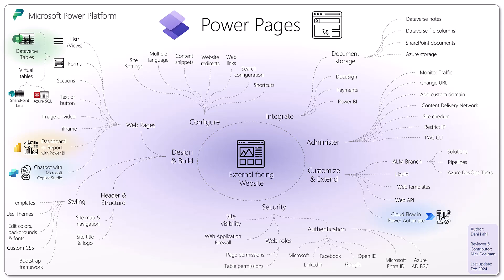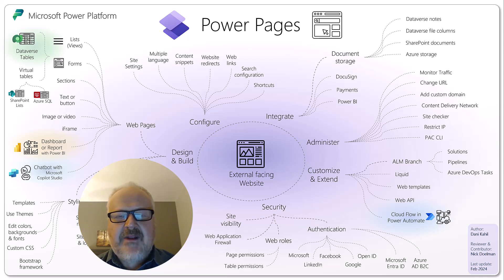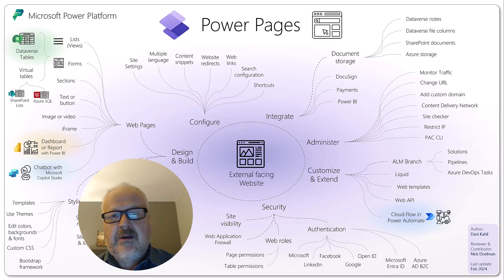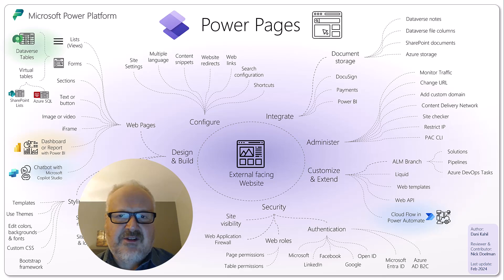For security, you can switch the visibility of a website on or off, assign page permissions to web roles, and assign table permissions to specific web roles. Web roles in Power Pages parallel security in Dynamics 365 and Dataverse — they can be stacked. The key difference is that a Power Pages user is someone authenticating from outside, and that user maps to a contact record in Dataverse rather than a system user.